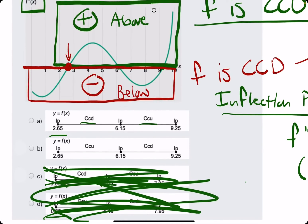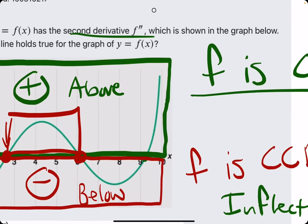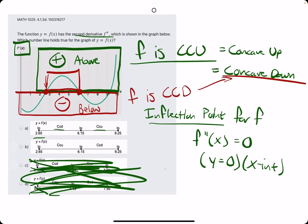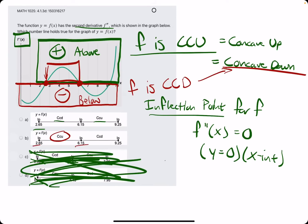So again, starting at this x-intercept at 2.65, going all the way to 6.15, we see that this function is above the x-axis. Therefore, above corresponds to concave up, so f is concave up from 2.65 to 6.15.